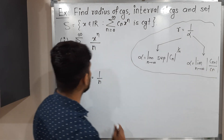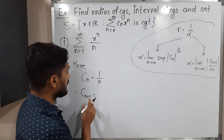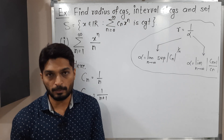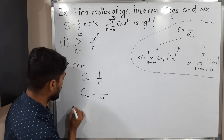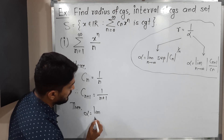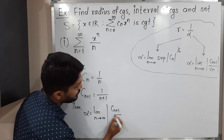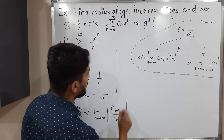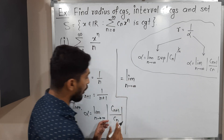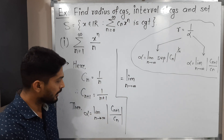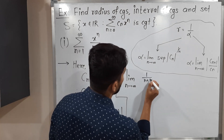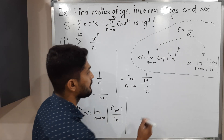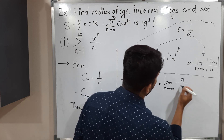In the second formula Cn+1 is also required. Cn+1 can be easily obtained just by replacing n by n+1, so we will have 1 upon n+1. Now we have both Cn and Cn+1. Using the formula, alpha equals the limit as n tends to infinity of mod Cn+1 upon Cn. Since both values are positive, mod is not required. Putting Cn+1 = 1/(n+1) and Cn = 1/n, since n is in the denominator of the denominator it goes to the numerator, giving us the limit as n tends to infinity of n upon n+1.